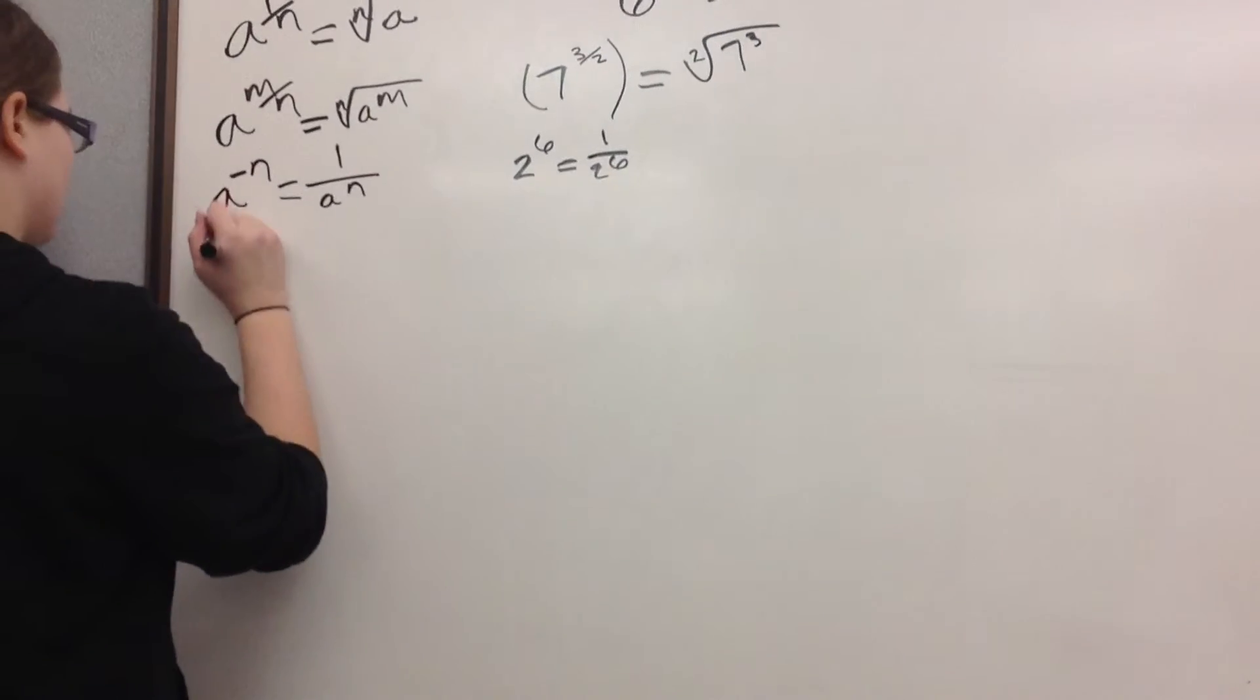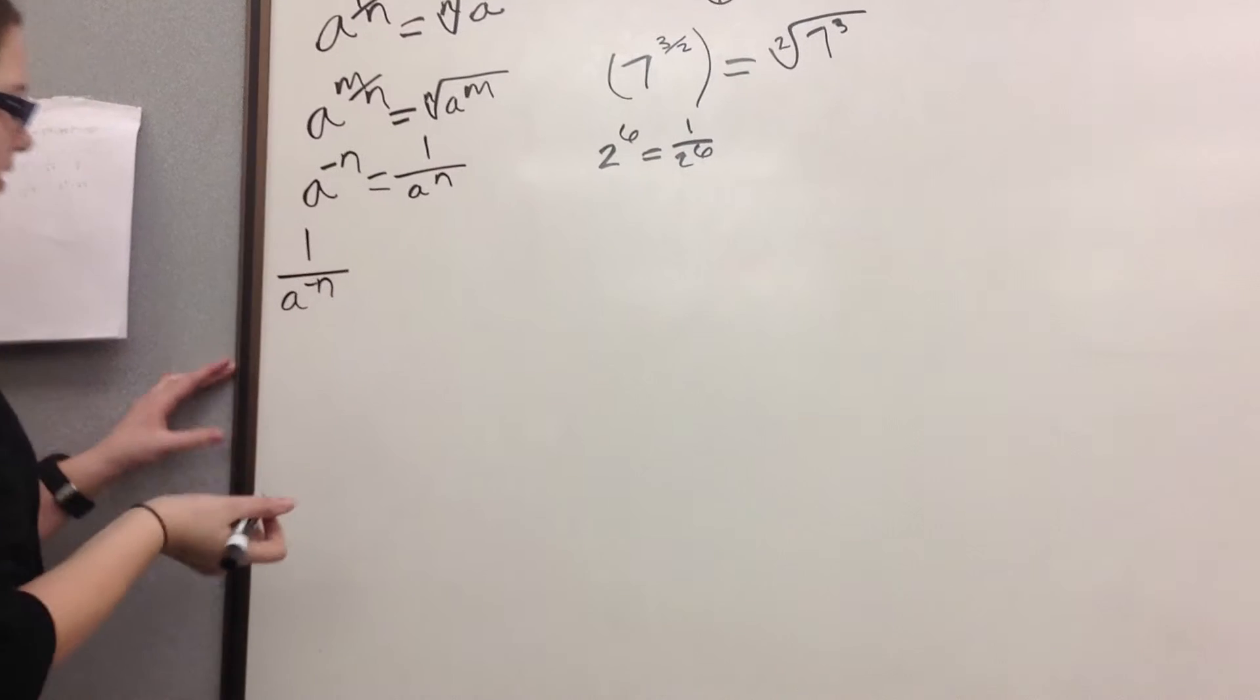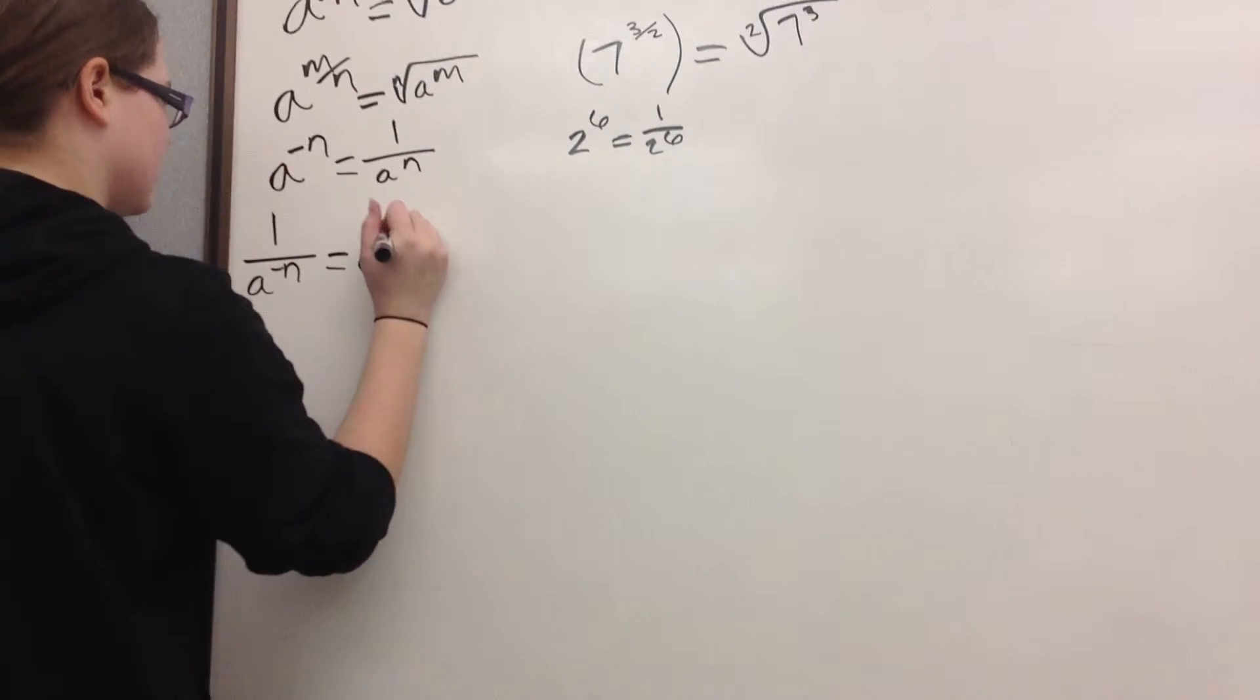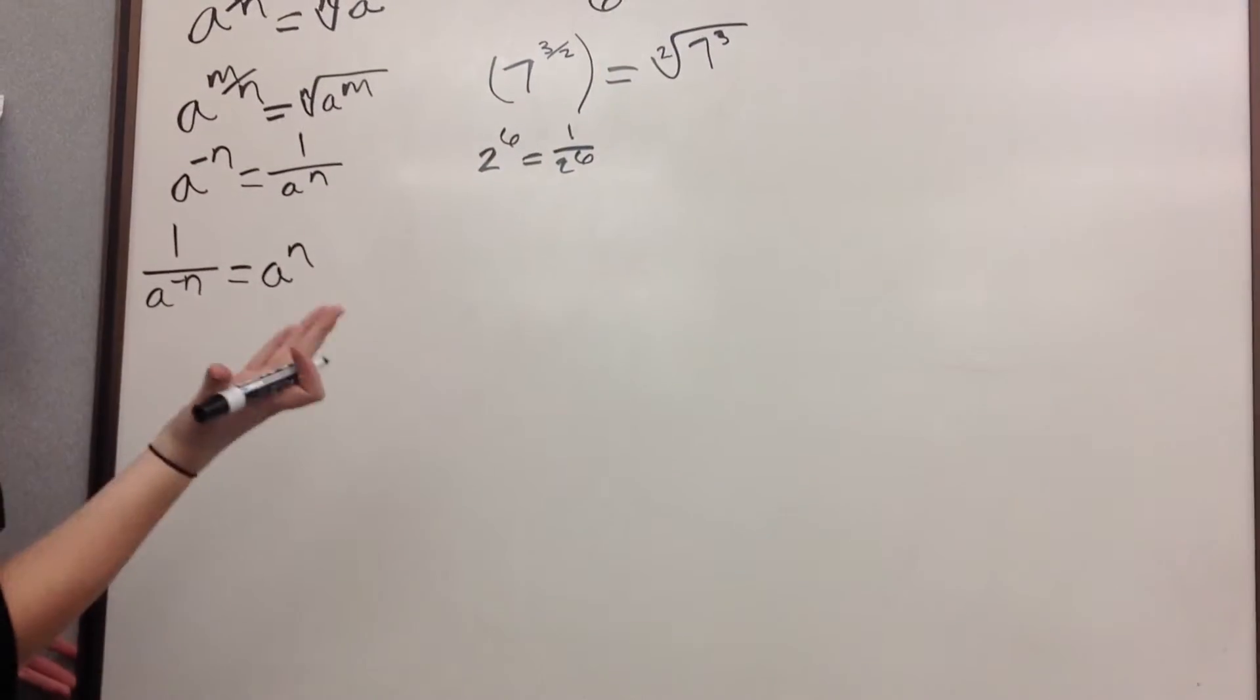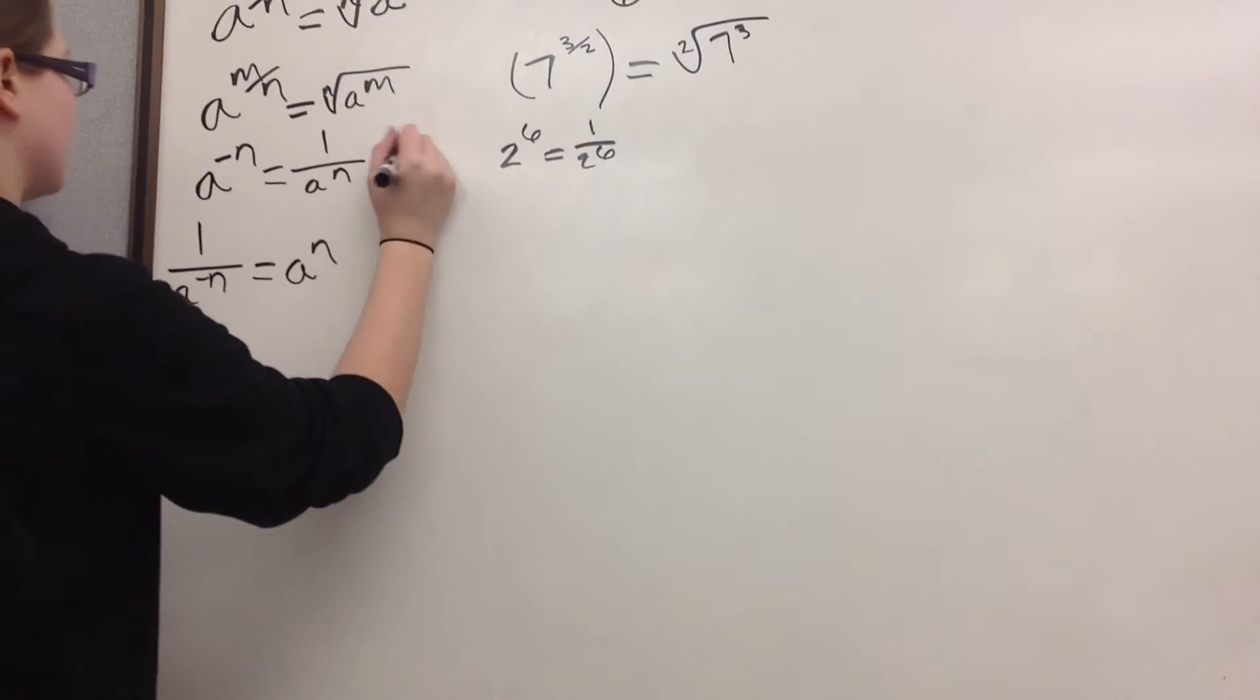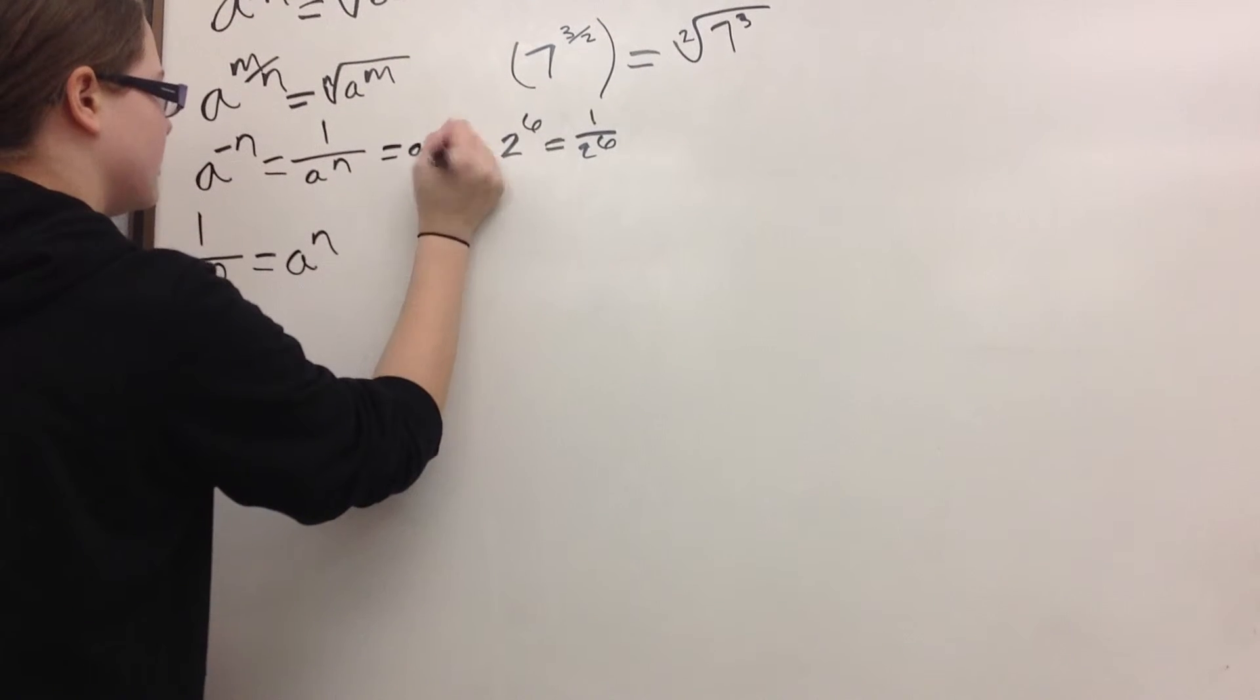And then if you have 1 over a to the negative n, then it is equal to a to the n. So it's the opposite, basically. And these only work if a is not equal to 0.